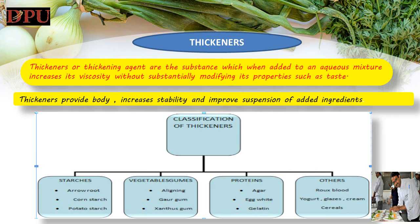3. Proteins like agar, egg white, gelatin, collagen etc. 4. Others like roux, blood, yogurt, glazes, cream, cereals etc. Thickeners are generally used in the final stage of preparation. Thickeners like flour and roux should be cooked before use so they won't impart a raw flavor to the food. Thickeners generally tend to lose their thickening potency in acidic mixtures, so acidic mixtures should be avoided.